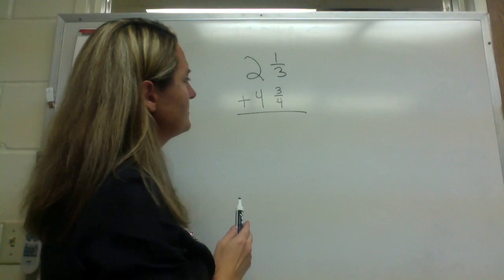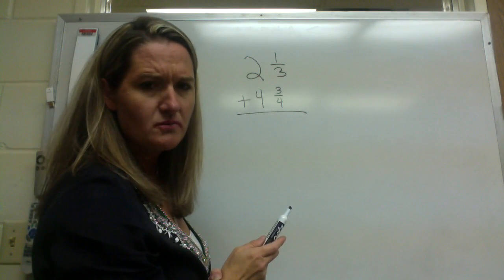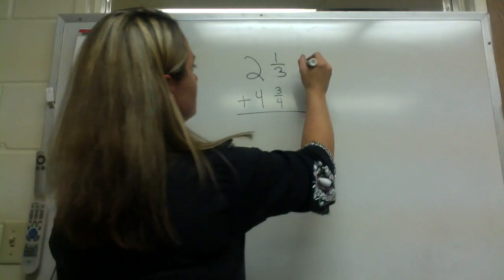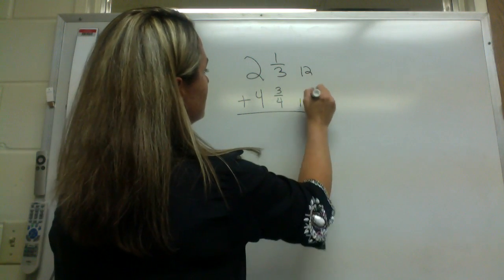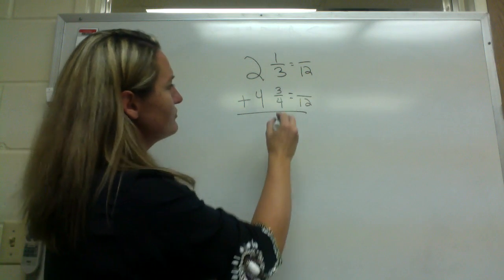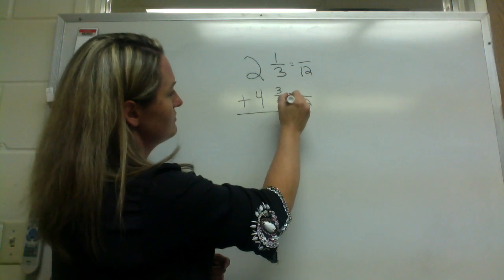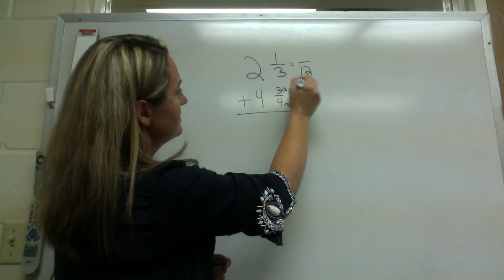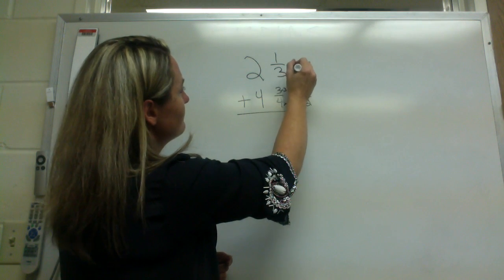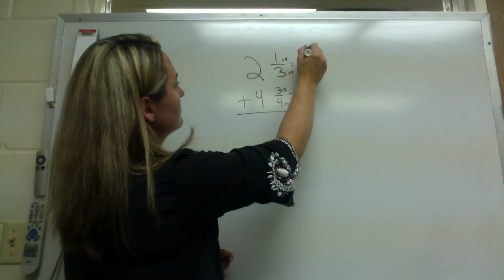So we've got three and four. What's the least common denominator? It'd be twelve, right? So we're going to write twelve, twelve. Now we're going to write equivalent fractions. Three-fourths is the same thing as one times three, nine over twelve. One-third is the same thing as one times four, four over twelve.